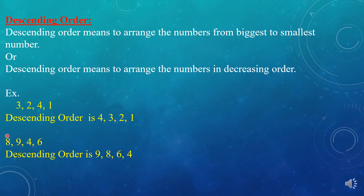One more example: 8, 9, 4, 6. What is the descending order of these numbers? First we write the biggest number. Which one is the biggest? 9. So first we write 9, then 8, then 6, and then 4. 4 is the smallest number.